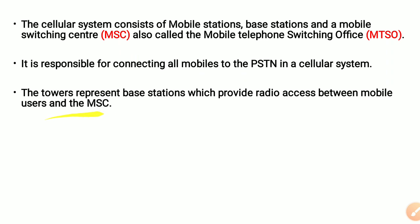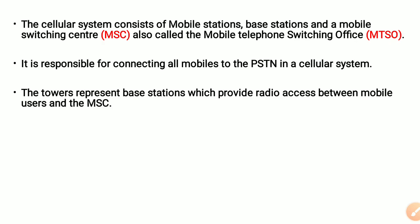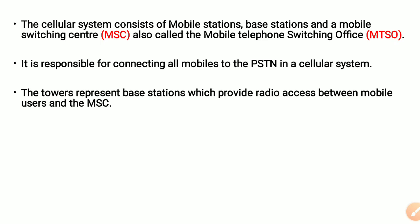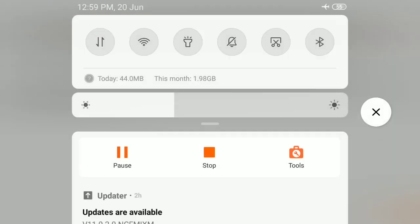The tower represents the base station. These base stations provide radio access between the mobile users and the MSC. That's all about the basics of cellular or mobile communication.